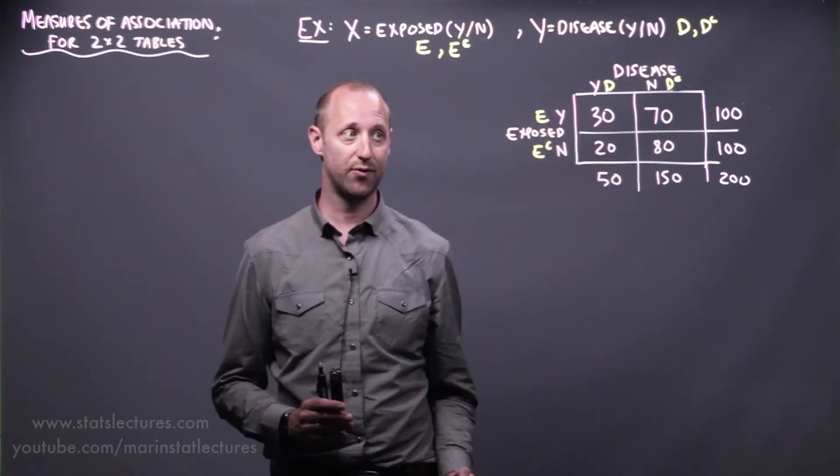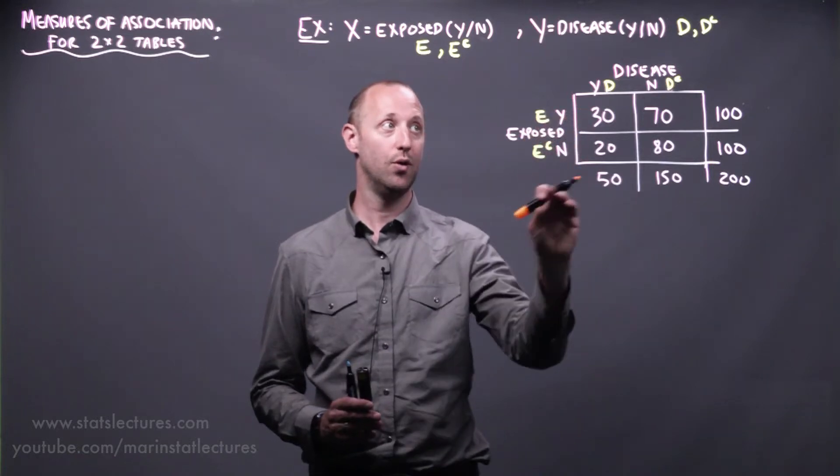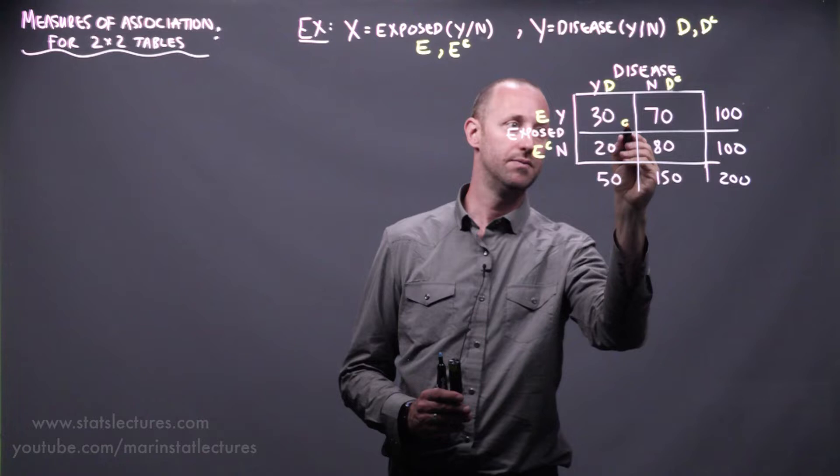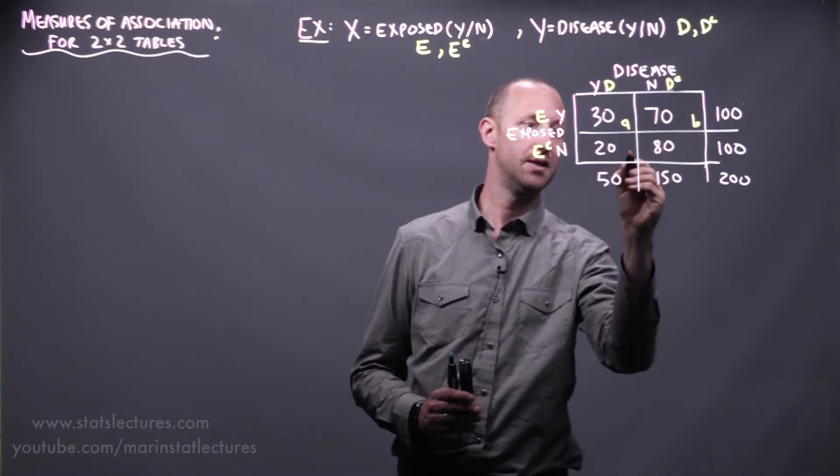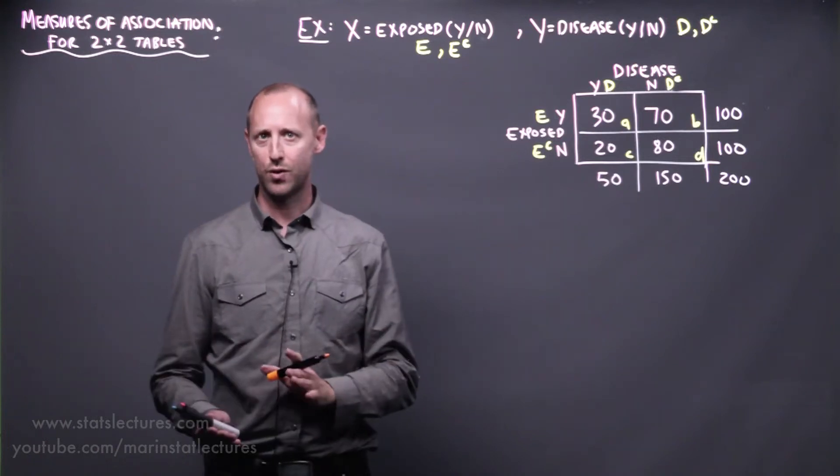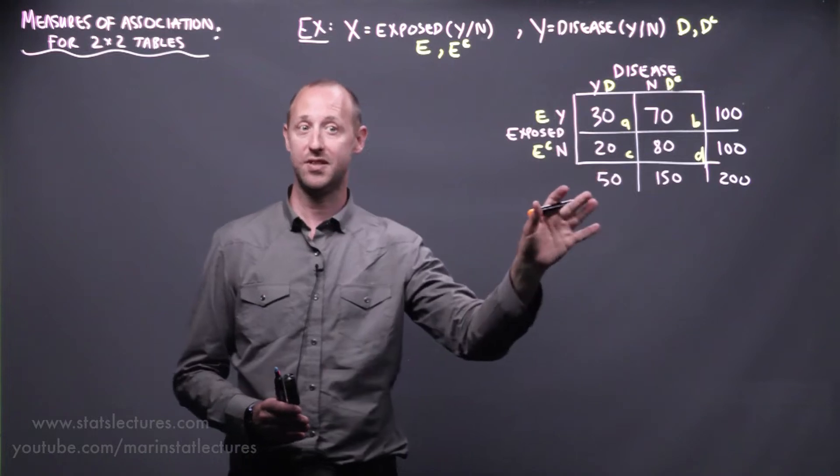When we set up the table in this exact format, meaning exposed on this axis here, yes and no, disease on the top here, yes and no, we can label these cells as A, B, C, and D. Now I want to mention a lot of the formulas for risk difference, risk ratios, odds ratios get presented using A, B, C, D's. I'm going to steer away from doing that for a few reasons.